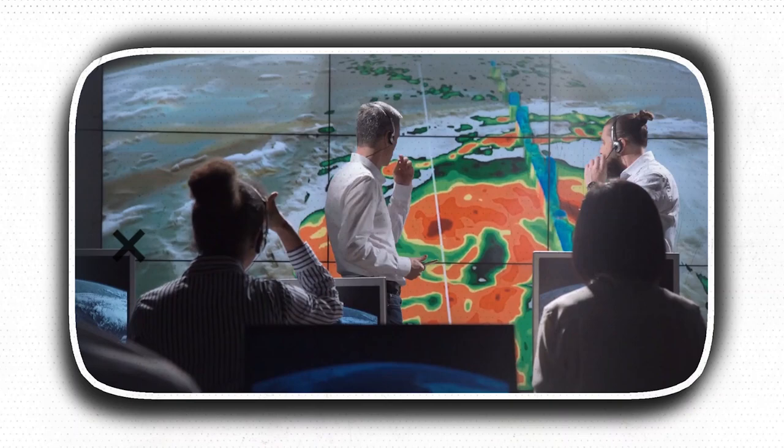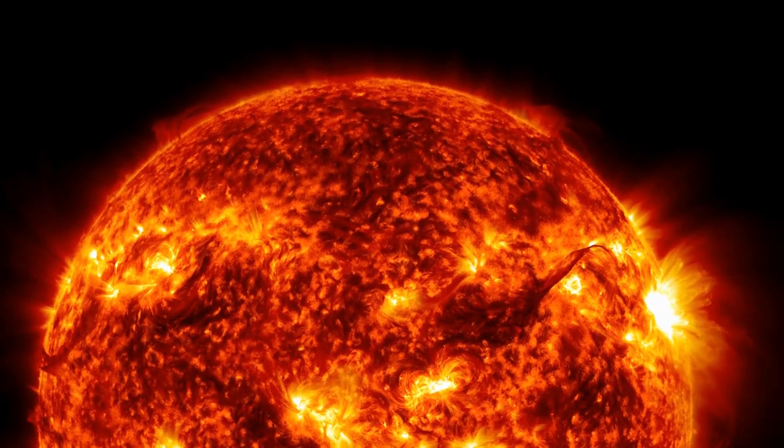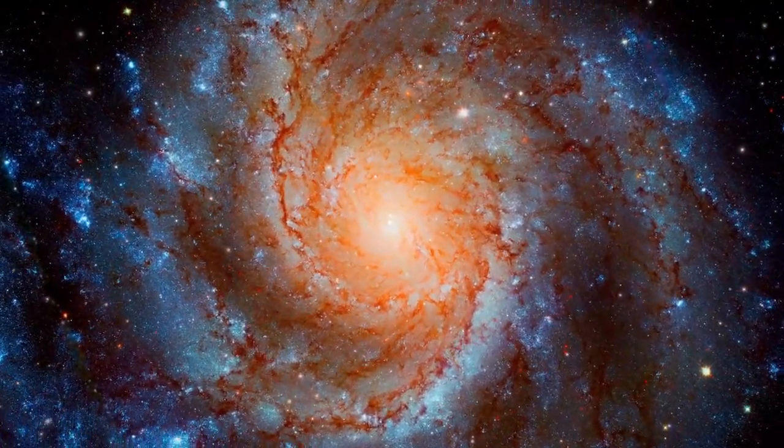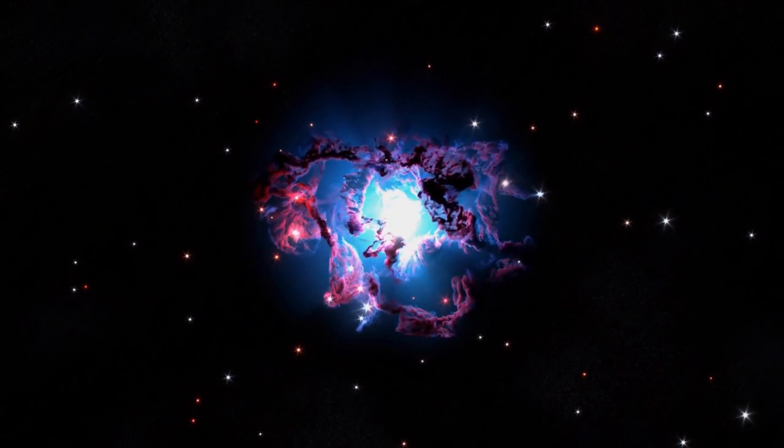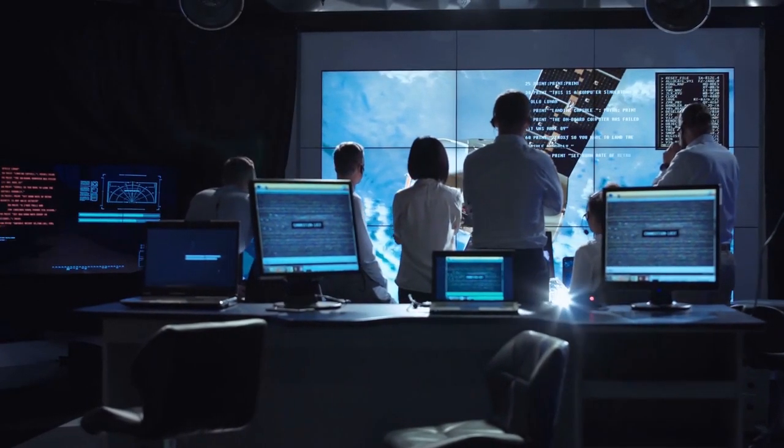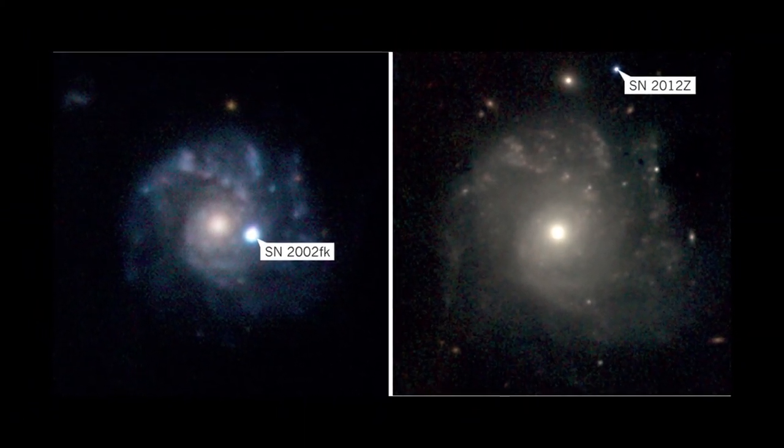For many years, scientists believed that white dwarf stars could not grow any larger than the Chandrasekhar limit, which is equivalent to 1.4 times the Sun's mass. This theory has partially waned in popularity in recent years due to the discovery of other supernovae that are less massive than this one, and new theoretical ideas that indicate alternate causes for supernovae to explode. Astronomers wondered if stars had ever been on the verge of the Chandrasekhar limit before exploding. The study's authors now believe that SN2012Z experienced this growth to the absolute limit.